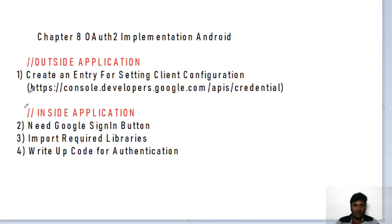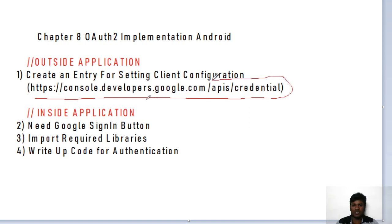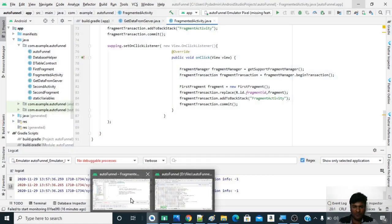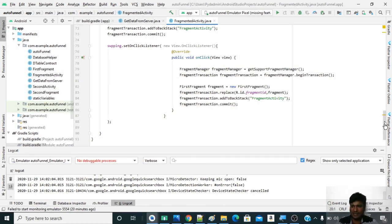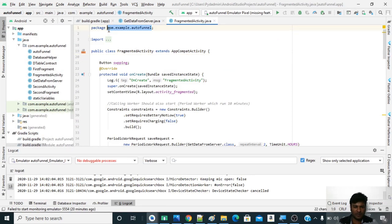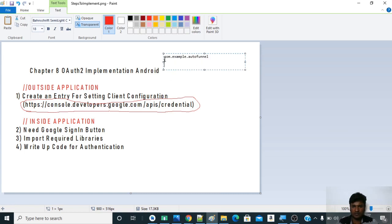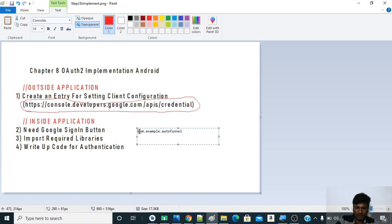Now let us see the steps involved in implementing OAuth2 in Android. First, create an account on console.developers.google.com and go to that page. You will require two things: one is the package name and the second is the fingerprint. You can get the package name from the very top of your Android project - let me copy and paste it. The package name is com.example.autofunnel. Now let us see the SHA1 fingerprint and how to get it.